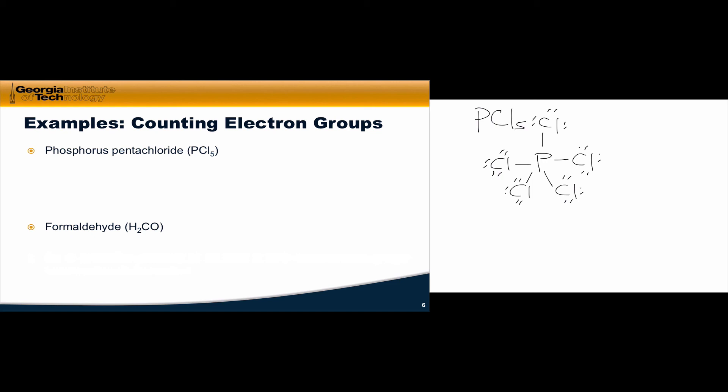What we can notice is that each single bond counts as an electron group, and so we have one, two, three, four, five single bonds to the phosphorus atom, and a total of five electron groups. Simple as that.